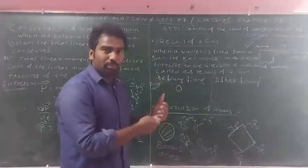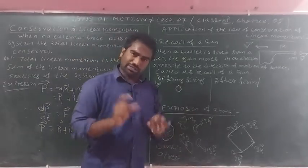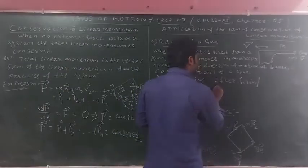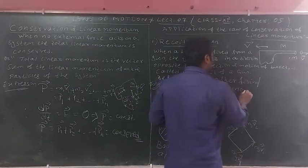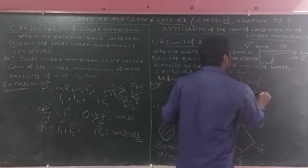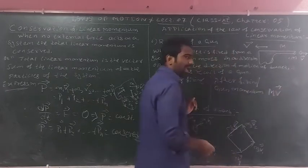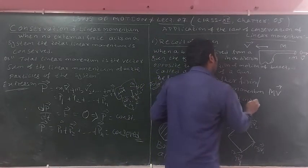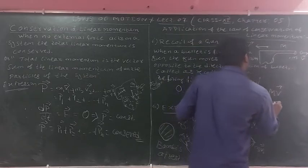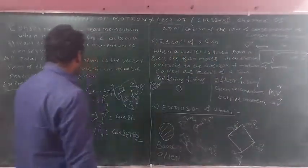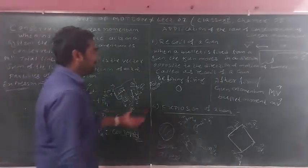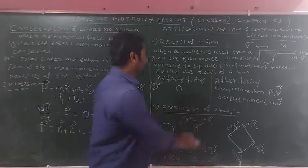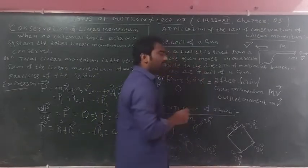This is called the recoil of the gun. Before firing, both gun and bullet are at rest, so the total momentum is zero. After firing, the gun has momentum: mass capital M with velocity capital V. The bullet has momentum: mass small m with velocity small v. According to the law of conservation of momentum, total momentum before firing equals total momentum after firing.